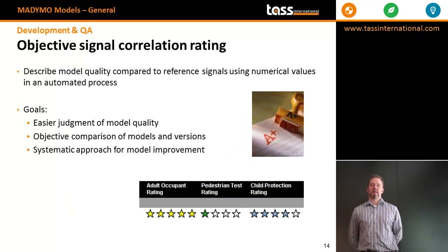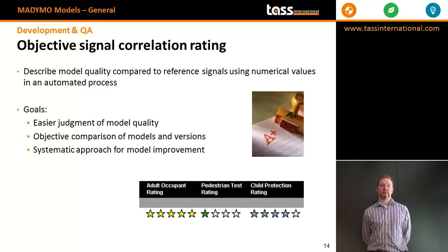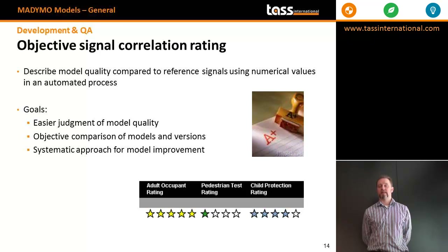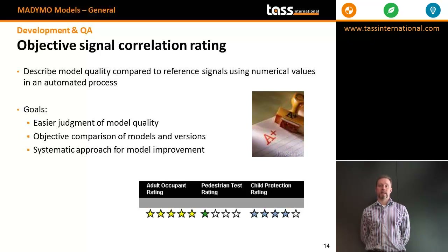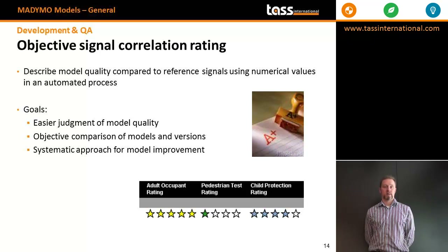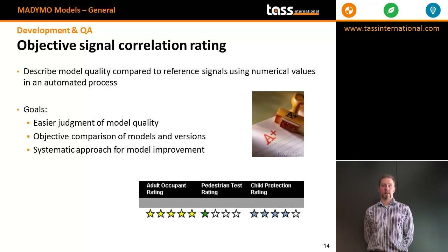Our objective signal correlation rating describes model quality compared to reference signals — whether experimental references or previous model versions — using numerical values automatically. The idea is to remove subjectivity from assessing dummy model performance and to provide a concrete numerical comparison of how two signals compare. It is a systematic approach that also allows us to compare the effect of changes upon large validation sets, as some models have upwards of 1000 tests with relevant signals.